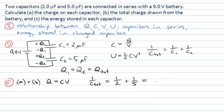Just to remind you, let's put them over a common denominator. A half is five tenths, and a fifth is two tenths. So I'm left with seven over ten as my reciprocal. So my total capacitance is ten divided by seven microfarads.